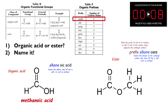Now for the ester on the right: I count the carbons on either side of the oxygen in the chain. The parent chain name comes from the side with the carbon double bonded to oxygen, and the prefix comes from the other side. Each side has one carbon, so I use the same prefix. The parent chain is methane, and the other carbon gives me methyl. Dropping the E from methane gives methanoate, and adding "methyl" as the first word gives us methyl methanoate.